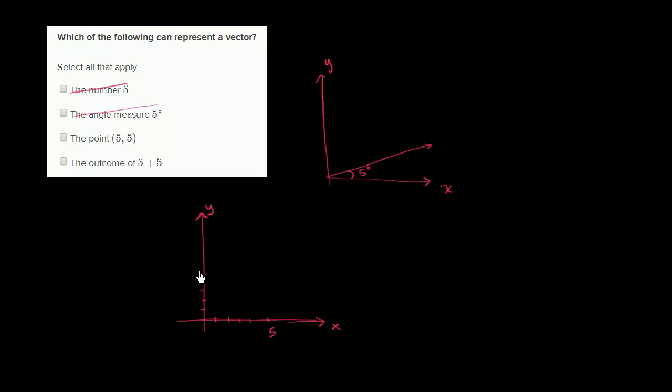1, 2, 3, 4, 5 in the positive vertical direction. Then the point 5 comma 5 is going to be right over there.